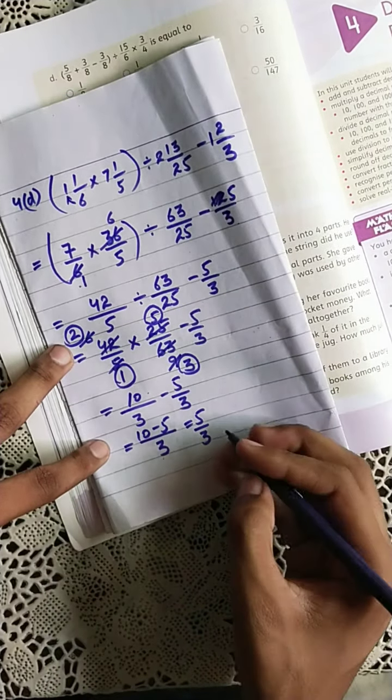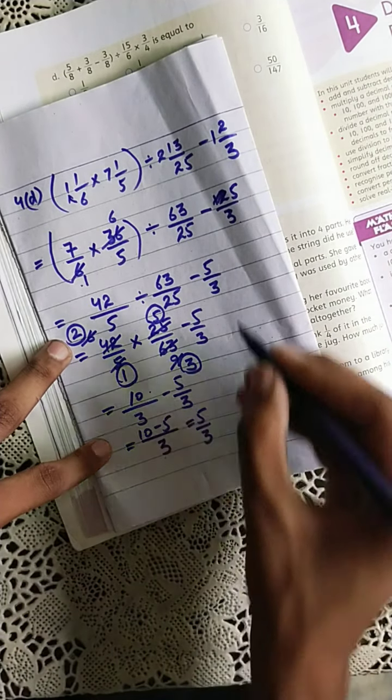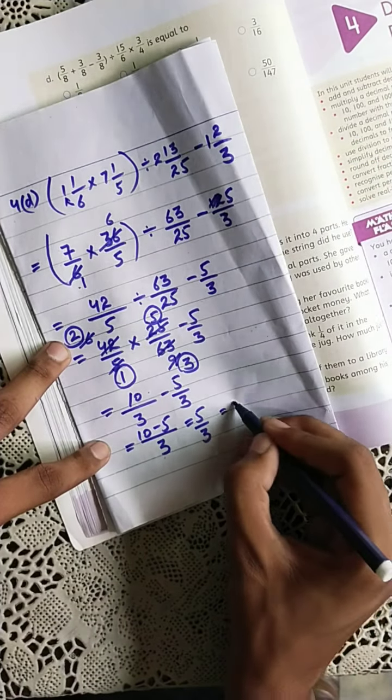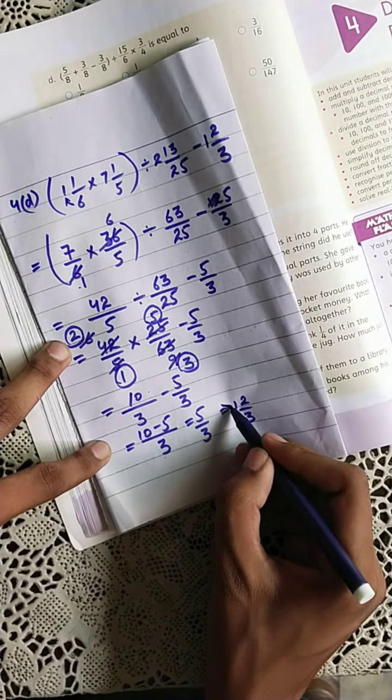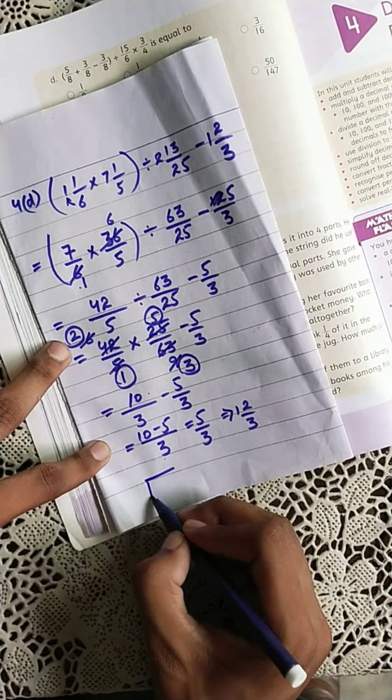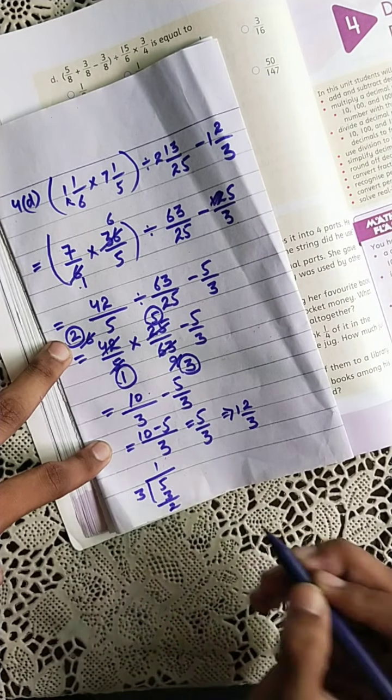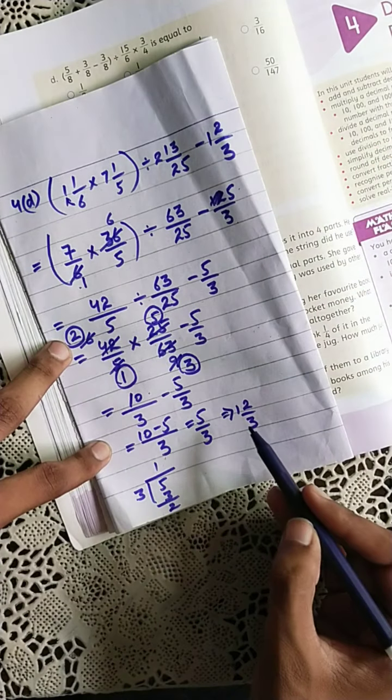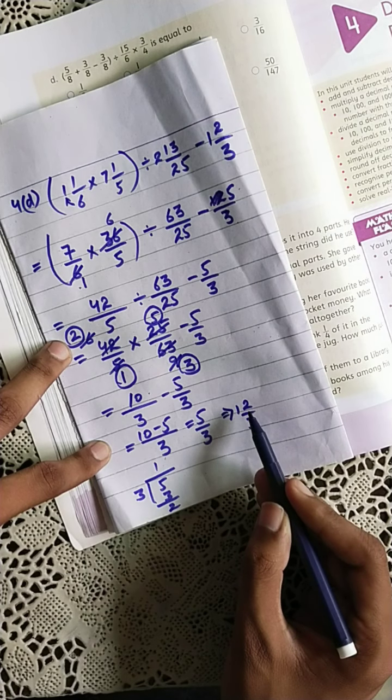We can change into the mixed fraction. 5 over 3, can we write 1 as a whole number and 2 over 3? This is correct. Here 3 times 1 is 3 and 2, so the answer 5 over 3 can be written as 1 and 2 over 3. Clear, so this is our final answer.